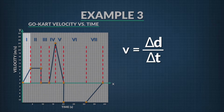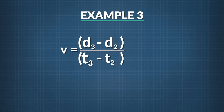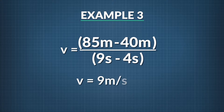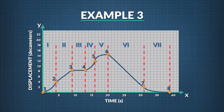To figure out the go-cart's final velocity in region one, we can look ahead to region two where the go-cart's velocity is constant. That value equals the displacement at point three minus the displacement at point two divided by the change in time between those points. Plugging in the numbers from our table: 85 meters minus 40 meters divided by 9 seconds minus 4 seconds equals 9 meters per second. This is the go-cart's velocity in region two, as well as at the end of region one. The go-cart's velocity starts at zero, increases to 9 meters per second in region one, and stays at the same velocity in region two.